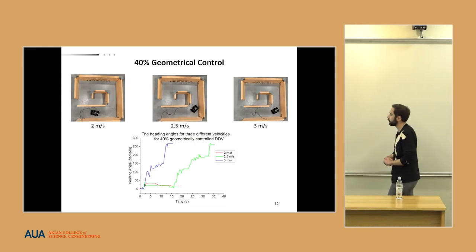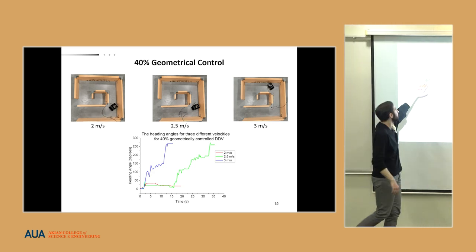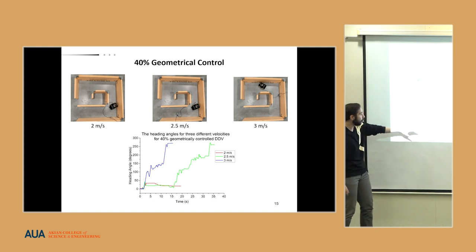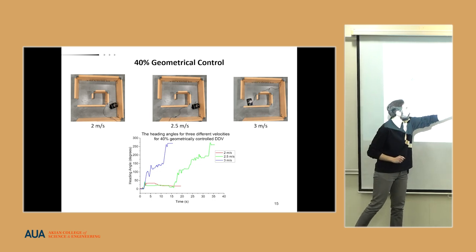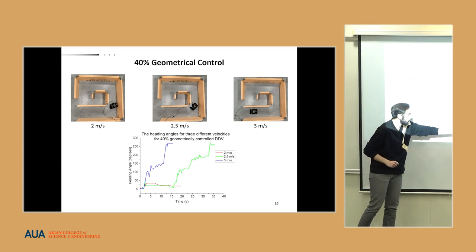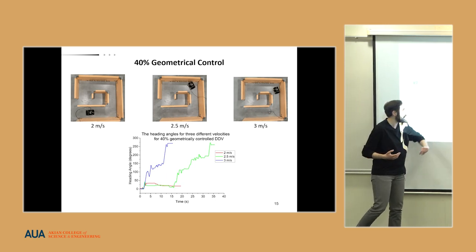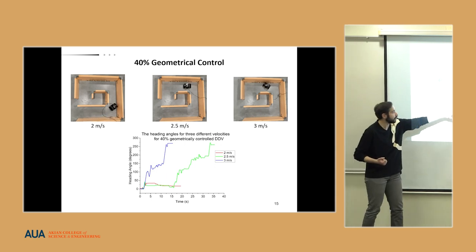With 40 percent, we can see that at two meters per second, the DDV comes here and stops, becoming unresponsive. Here we can see two points from 2.5 meters per second where it reaches the endpoint during a long time. However, with three meters per second, it reaches faster but we have a lot of oscillations.